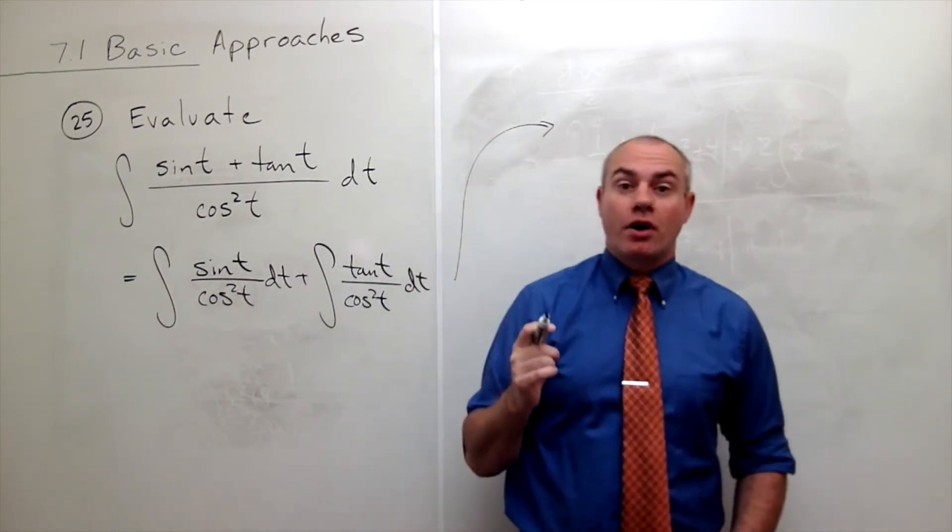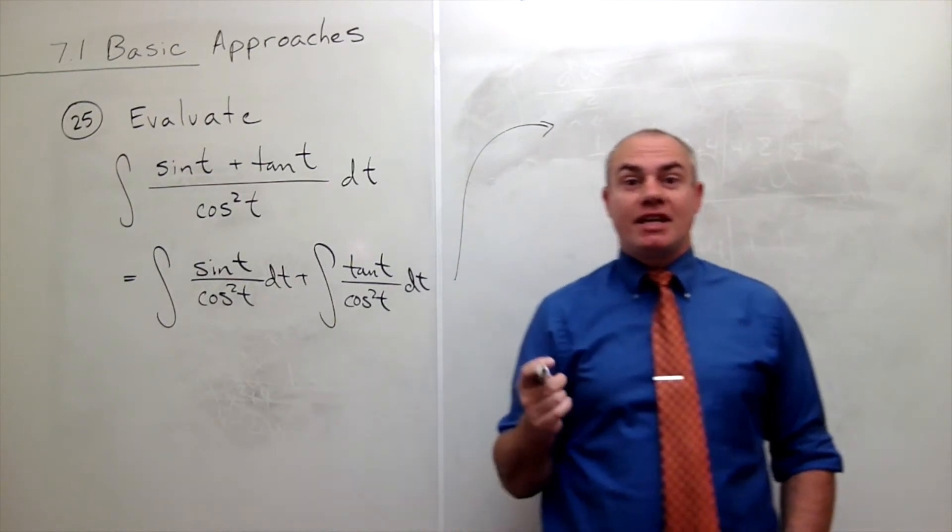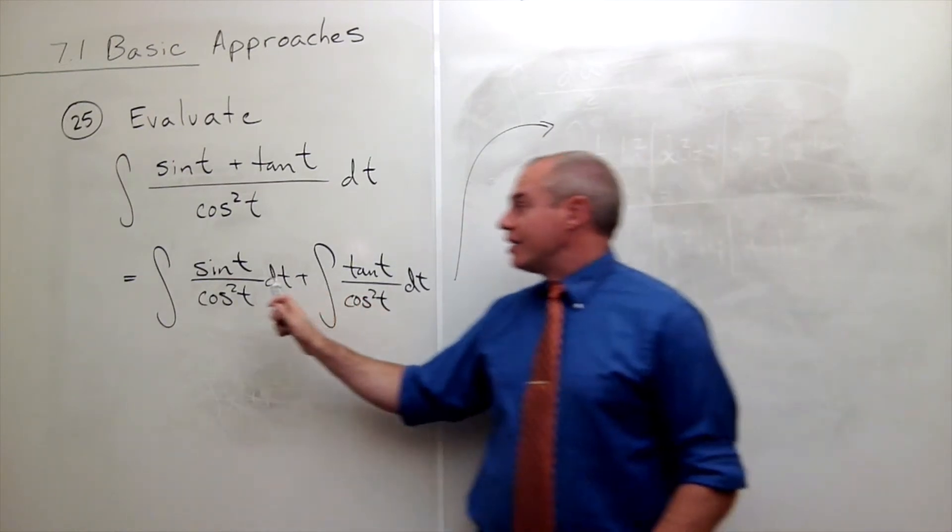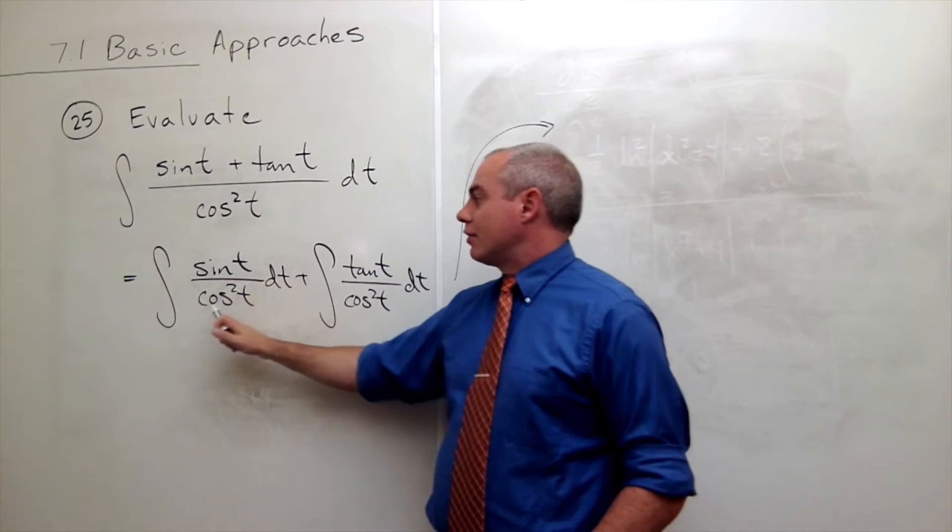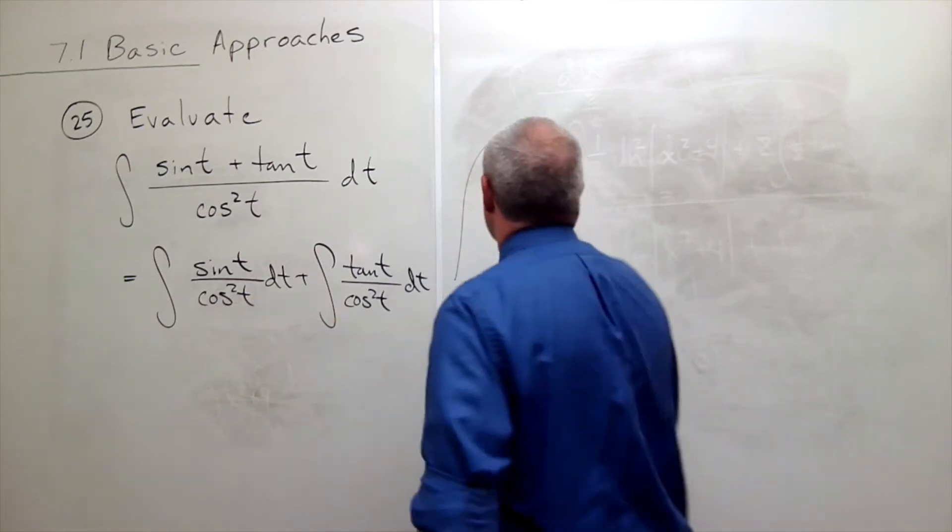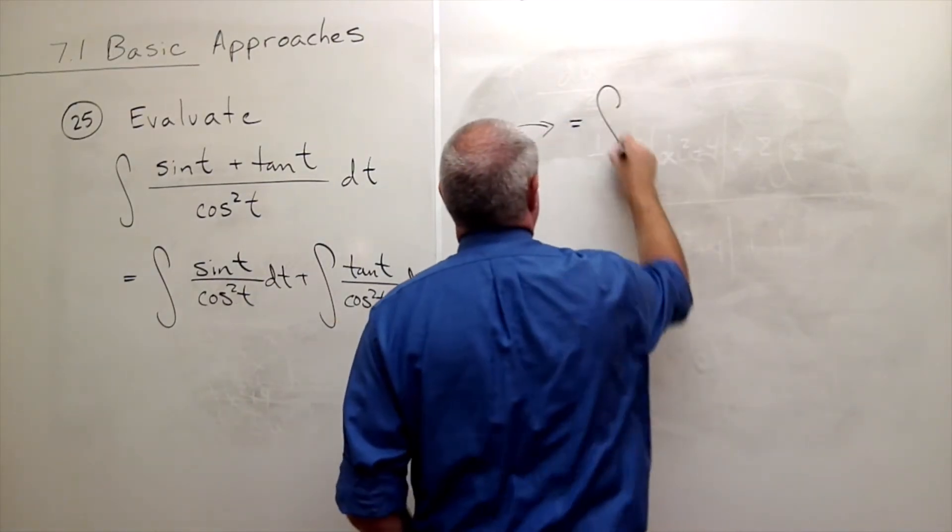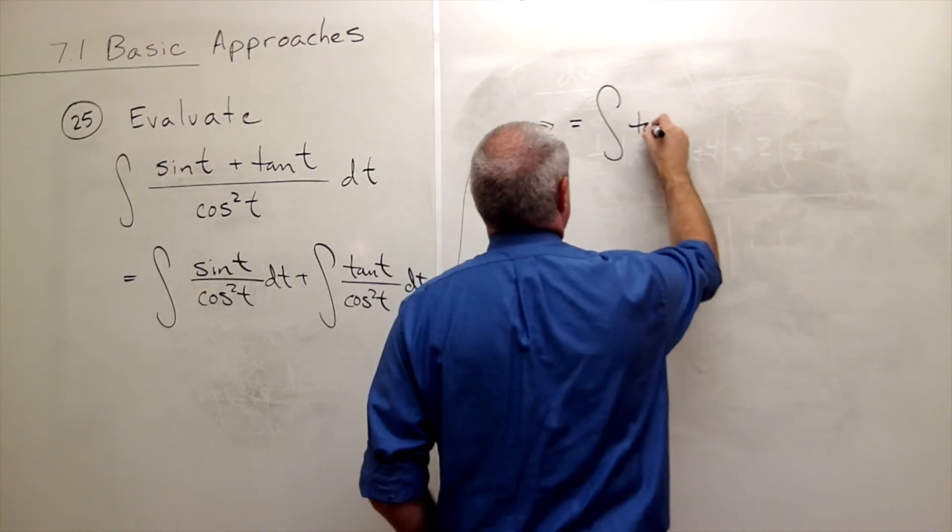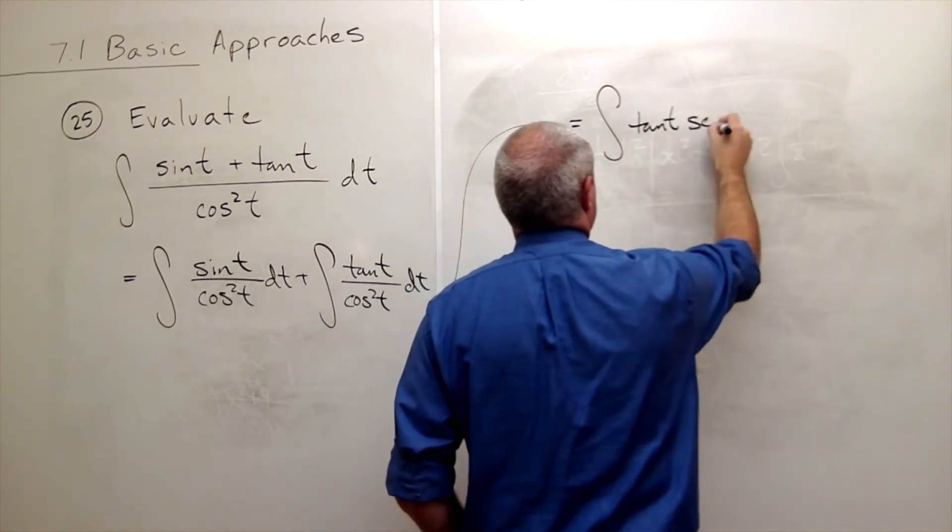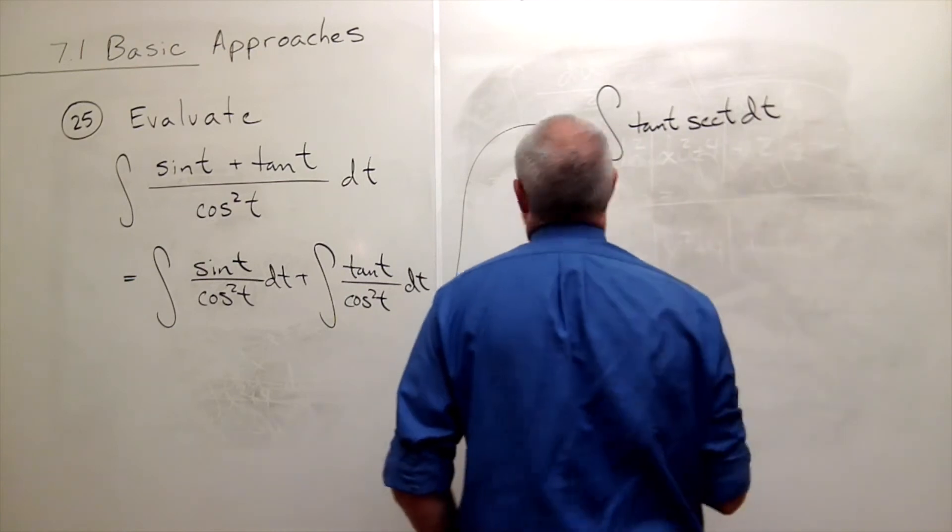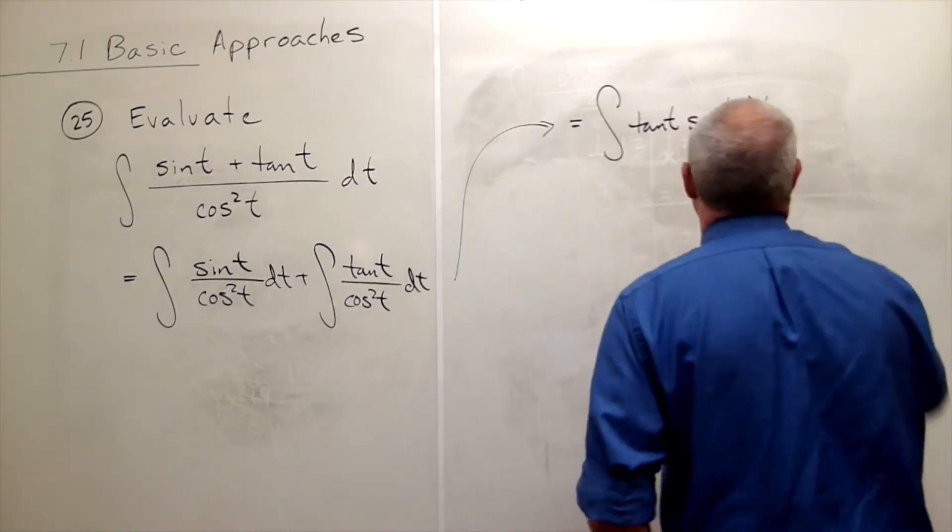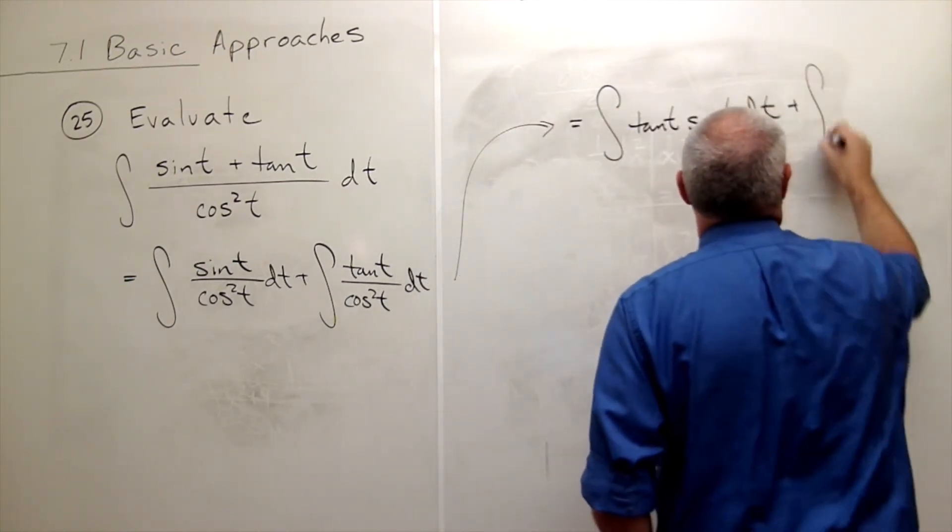But one over cosine t is secant t. So another way of writing sine t over cosine squared t would be the integral of tangent t secant t dt plus integral.